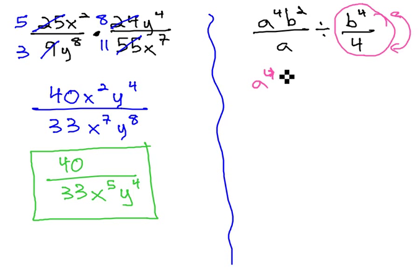So, this would be a to the 4th, b squared over a, times 4 over b to the 4th.